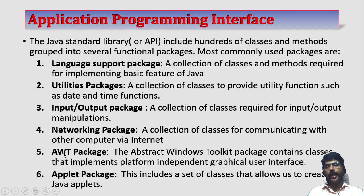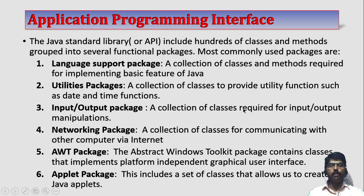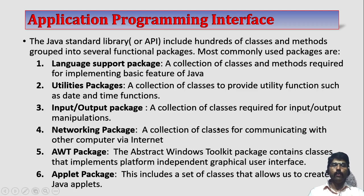AWT package — AWT means Abstract Window Toolkit. As the name itself indicates, it is a window toolkit — graphical user interface. If you want to create windows, buttons, drop-down boxes, radio buttons, or many graphical elements, we use AWT packages. The last one is called Applet Package — if you want to create a small Java application called an applet, these classes are used.